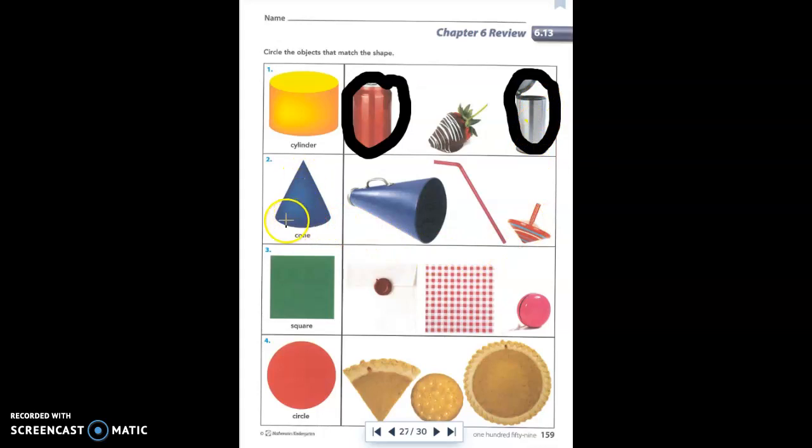Next, we're looking for shapes that resemble a cone. Does the megaphone resemble a cone? Yes, it does. How about a straw? Nope. A straw is a cylinder. I'm not going to circle that. Well, the bottom portion of the top is also a cone. So I'm circling the megaphone and the top.